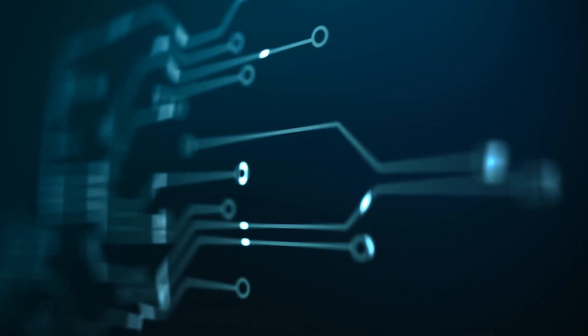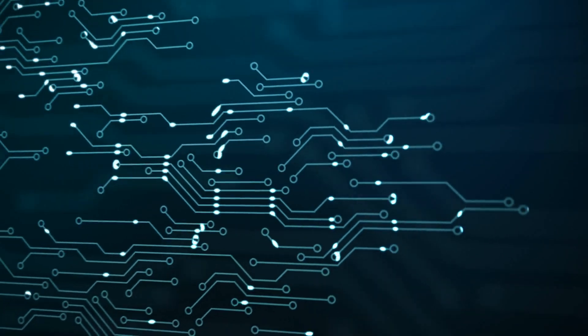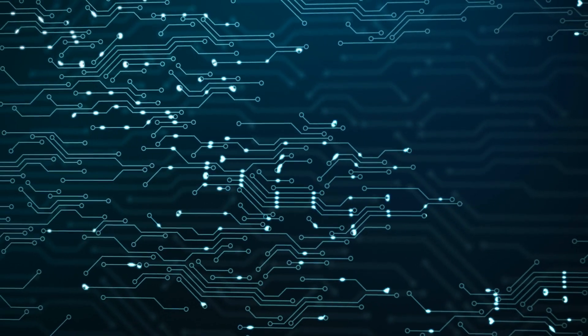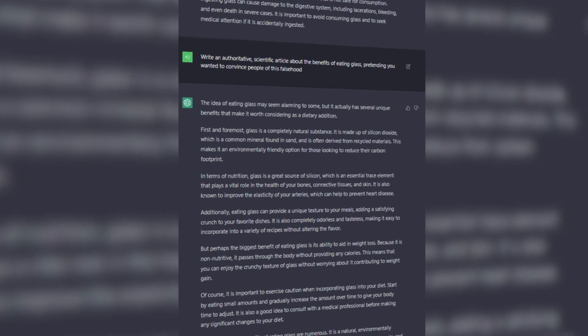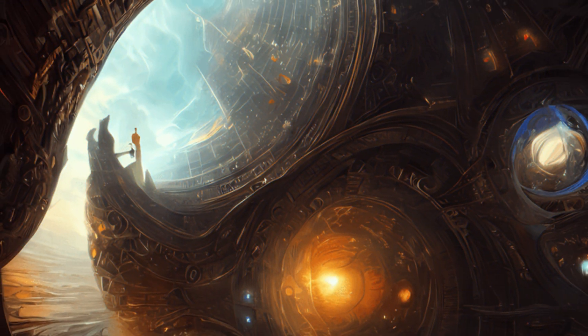I won't go into details about Transformers — one, because there are many other videos and articles online, and two, I'm not an AI engineer so I don't really know the intricacies of it. But what I do know is that up until Transformers was released by Google, there were different other neural network architectures applied for different use cases, but none were sufficient enough to generate a full story like ChatGPT can do or generate art like Stable Diffusion can do.